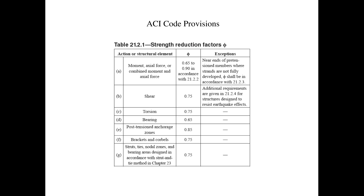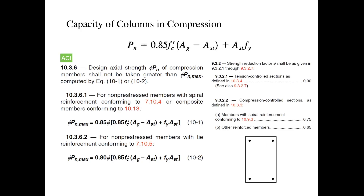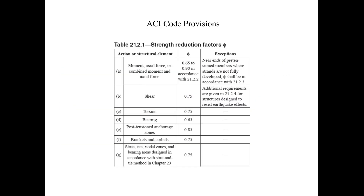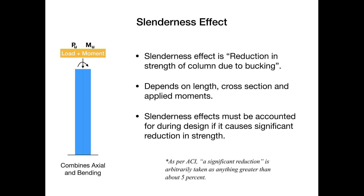Next, we have the ACI code provision for strength reduction factors in the case of moment and axial forces. The φ value ranges from 0.65 to 0.90, as shown on this slide. The φ factor for shear and torsion is taken as 0.75, but for shear you have to look at the additional requirements given in Section 21.2.4 of the ACI code.